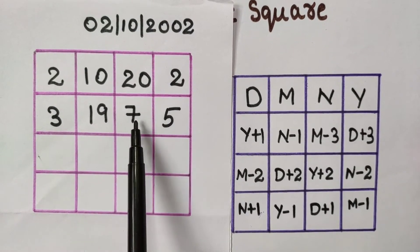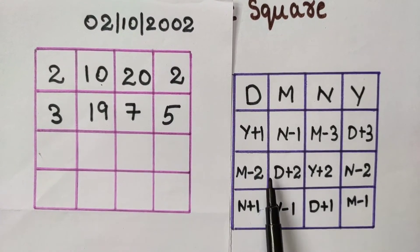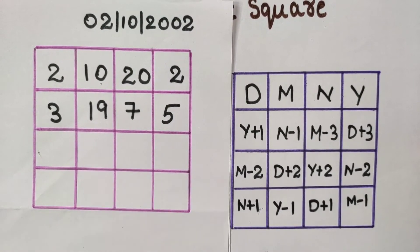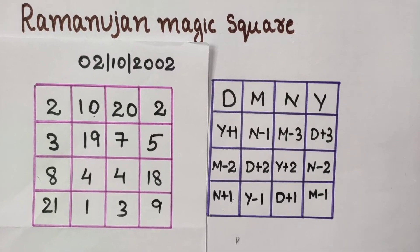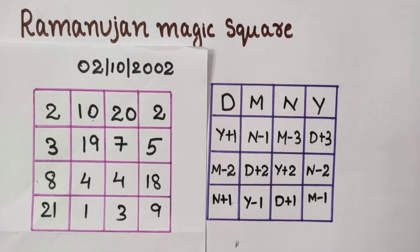M-3 is 7, and D+3 is 5. We got the second row. Finding numbers in remaining boxes using the instruction in each box. Finding the sum of numbers as did in Ramanujan magic square, I get 34 as the sum here.